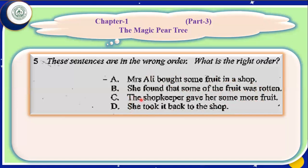For example: Mrs. Ali bought some fruit — that is okay. She found that some of the fruit was rotten — that is okay, first she bought, then she found rotten fruit. After that, the shopkeeper gave her some more fruit, and she took it back to the shop. But the order of the last two sentences does not look correct. She will go to the shop first, then the shopkeeper will give her some more fruit.